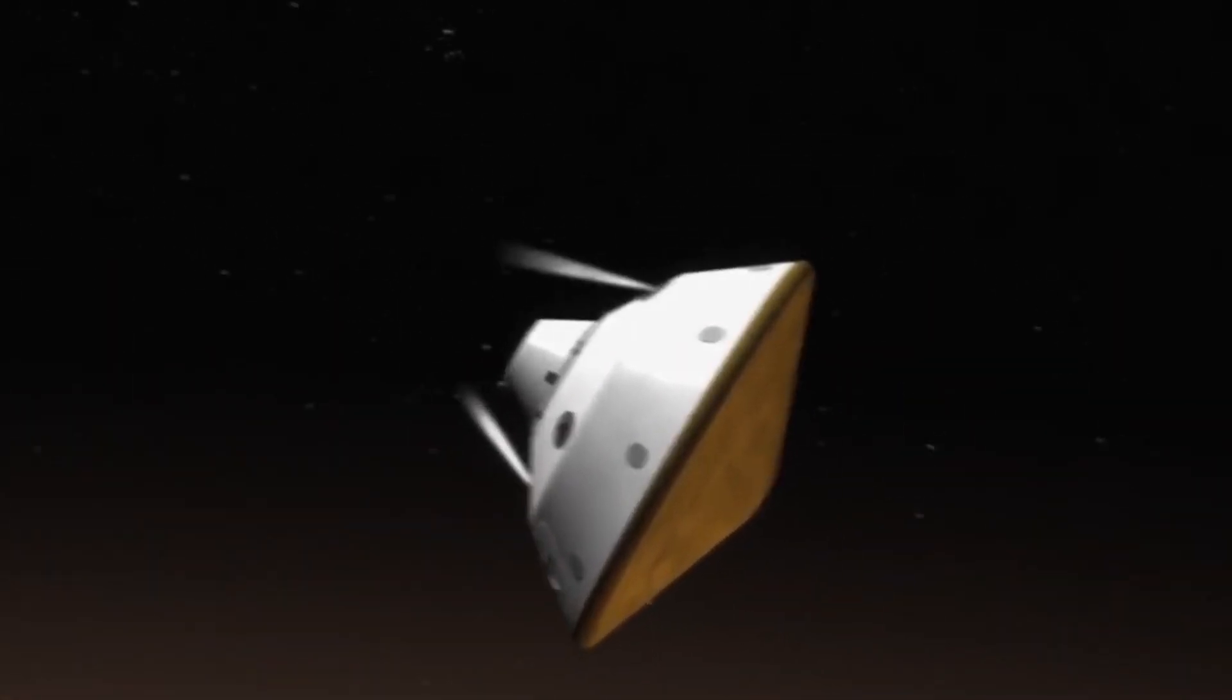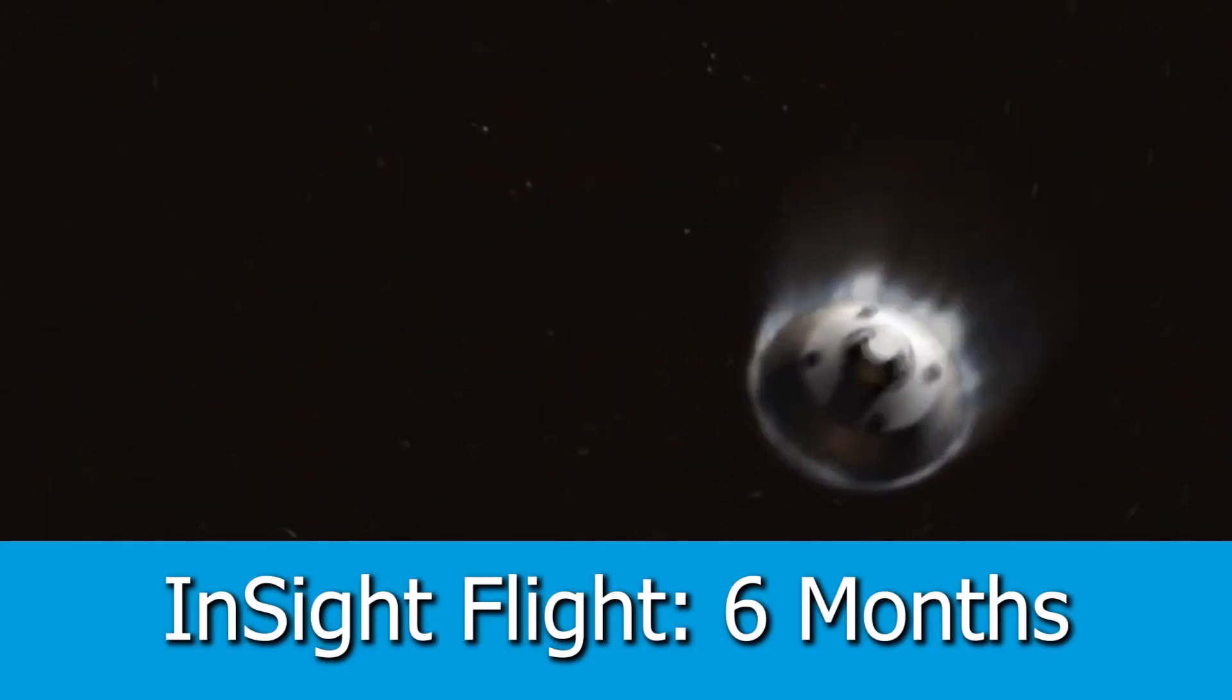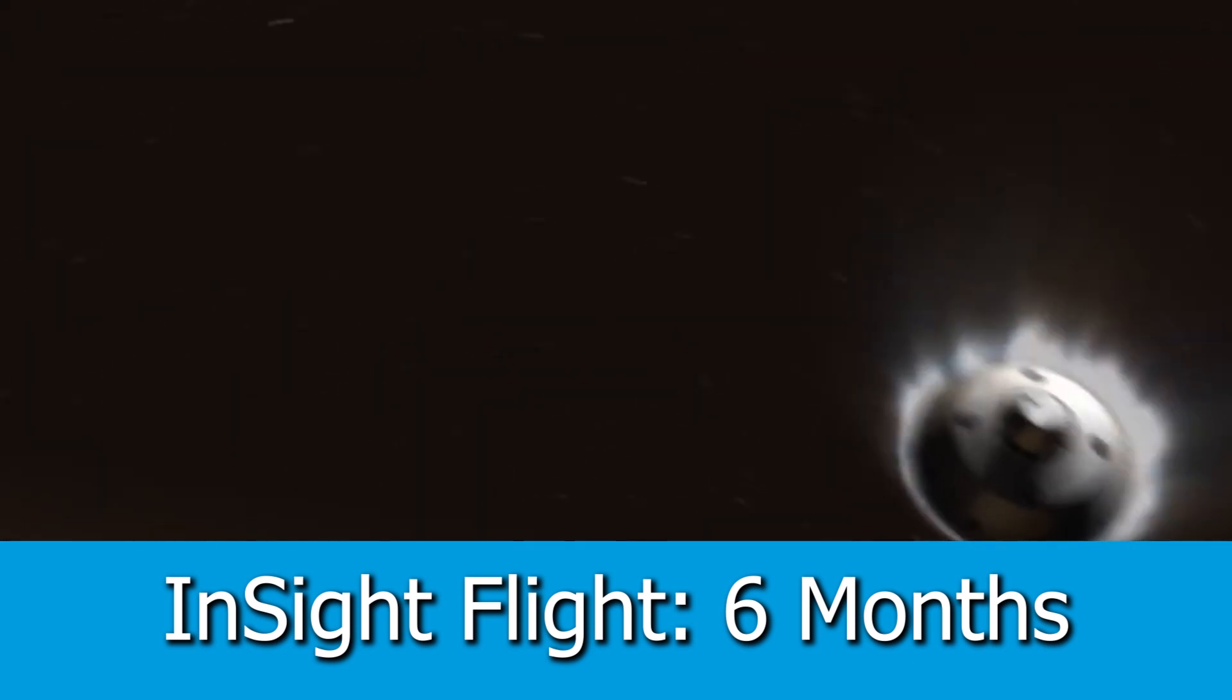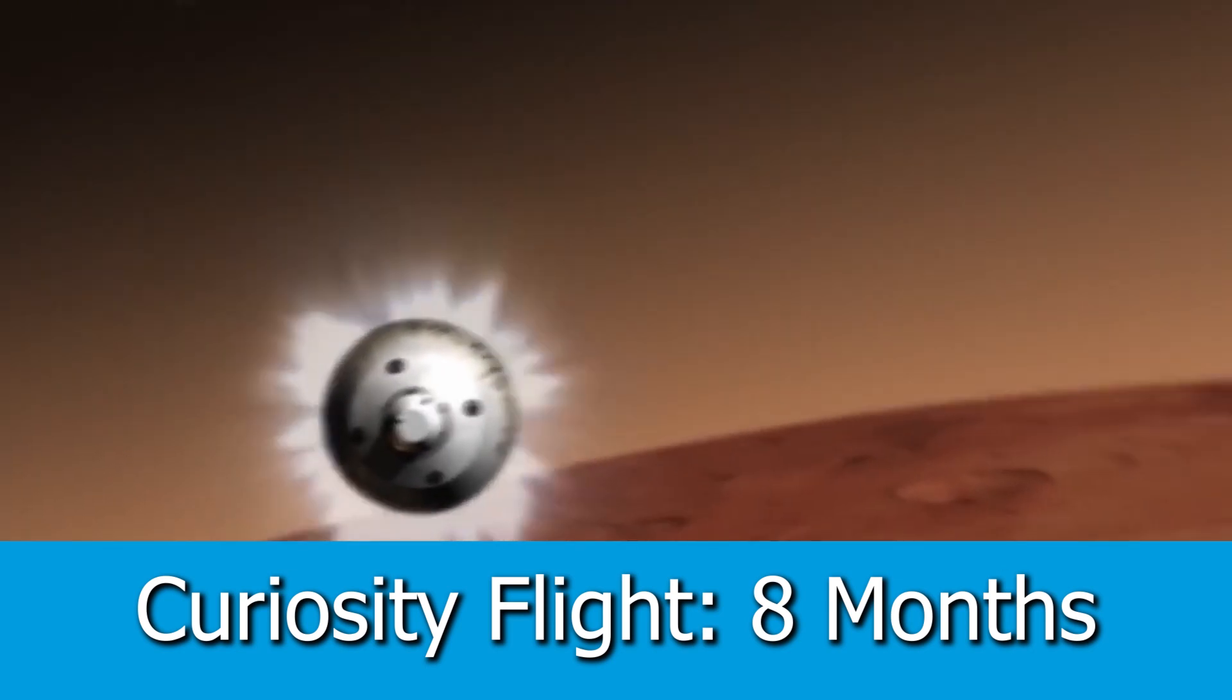To put this into perspective, the most recent mission that NASA has launched to Mars took around six months to get there. And the Curiosity rover, or the last rover that they sent to Mars, took around eight months. So then again, it falls in the six to eight month range that we typically see.